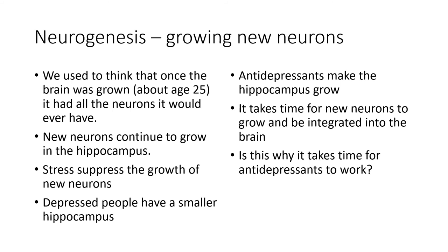We should also talk about neurogenesis — the ability to grow new neurons. We used to think that once the brain was fully grown, which we now think is about age 24 to 26, people would have all the neurons they would ever have. However, we've learned that new neurons do continue to grow, particularly in the hippocampus which functions in storing memories. And we learned that stress suppresses the growth of these new neurons.